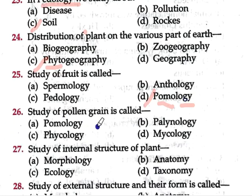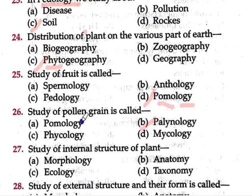Question number 26: Study of pollen grain is called — option A pomology, option B palinology, option C phycology, option D mycology. Option B is correct — palinology is the study of pollen grain. Pollen grains are male gametes found in angiosperms and gymnosperms. Within one cell there are two male gametes, and they are found on flowers.